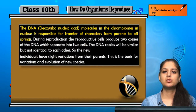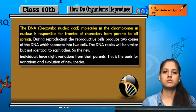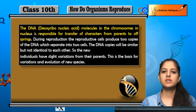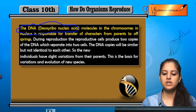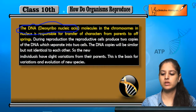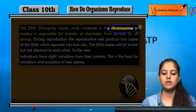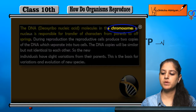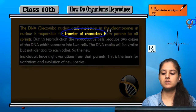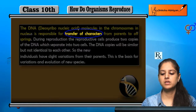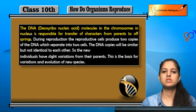Humne baat ki jo organism naye offspring ko produce kar raha hai, woh ek dam same hote hain — organism aur offspring. Iska reason kia hai? Jo DNA present hota hai — DNA, that is the deoxyribonucleic acid molecules — they are present in chromosomes. Nucleus ke andar chromosome mein DNA molecules present hote hain. Isi wajah se jo transfer of characters hai from parents to offspring, yeh possible ho pata hai. Isi wajah se parents aur offspring mein kuch similarity hoti hai.